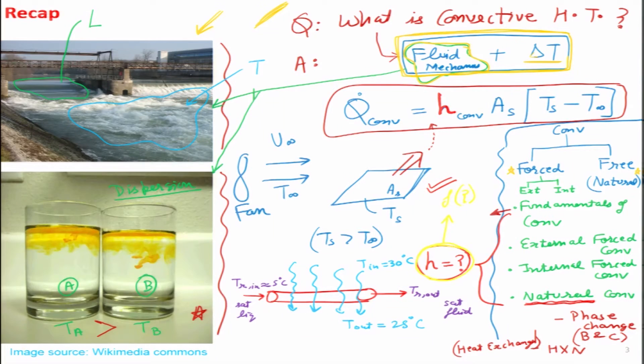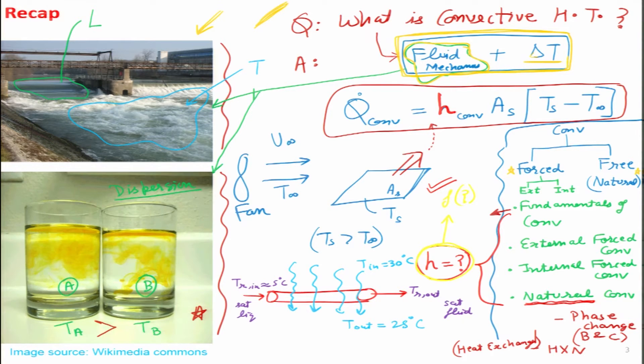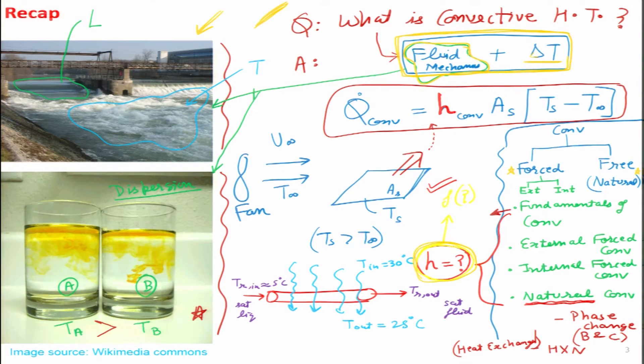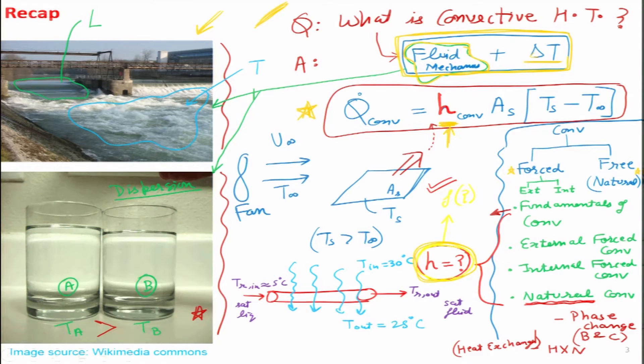If something naturally cools without the presence of a blower due to change in density with temperature — for example, a hot cup of tea gradually cooling because the air around it starts to move due to buoyancy effect — those kinds of convective heat transfer are classified as natural or free convection. One of the main concepts we will focus on from this lecture onward is figuring out the value of H, the convective heat transfer coefficient. The convection equation is straightforward, but the important and difficult part is determining the value of H.